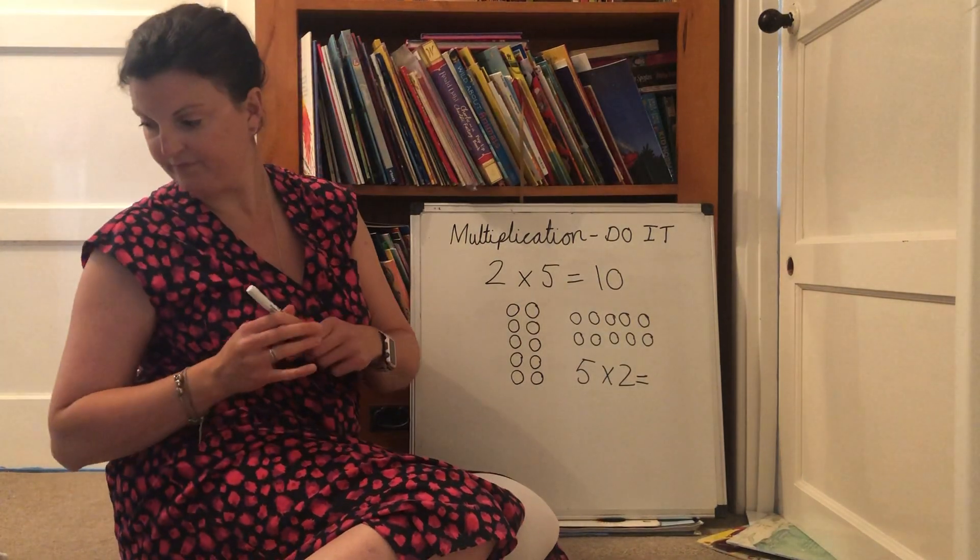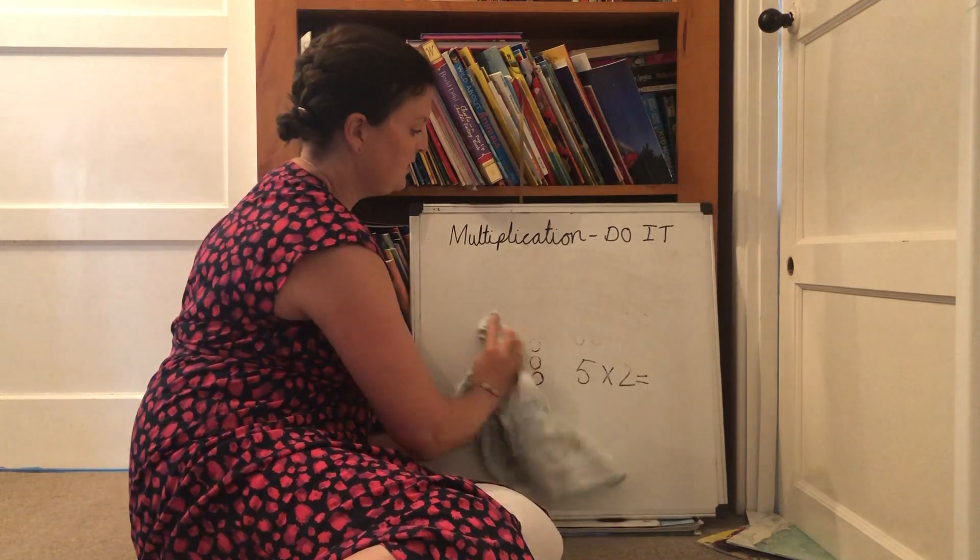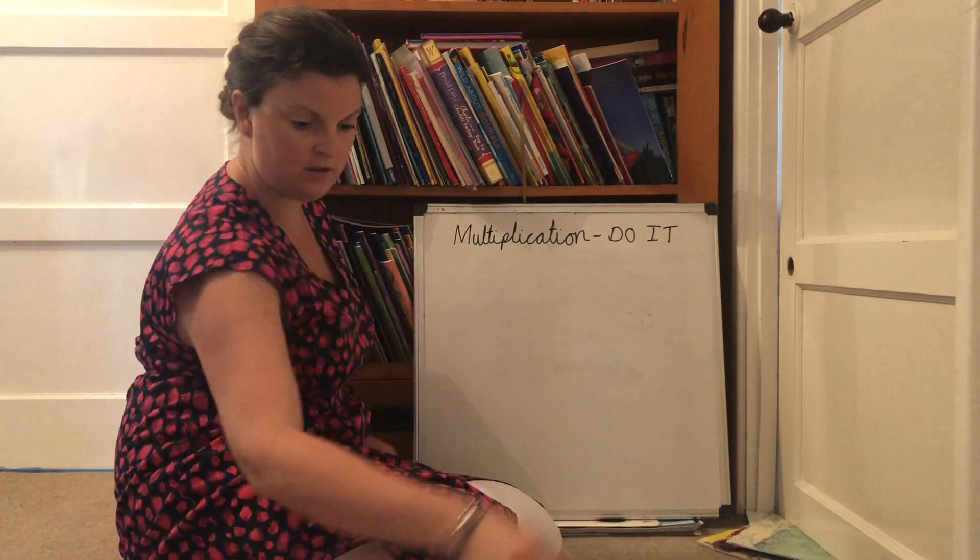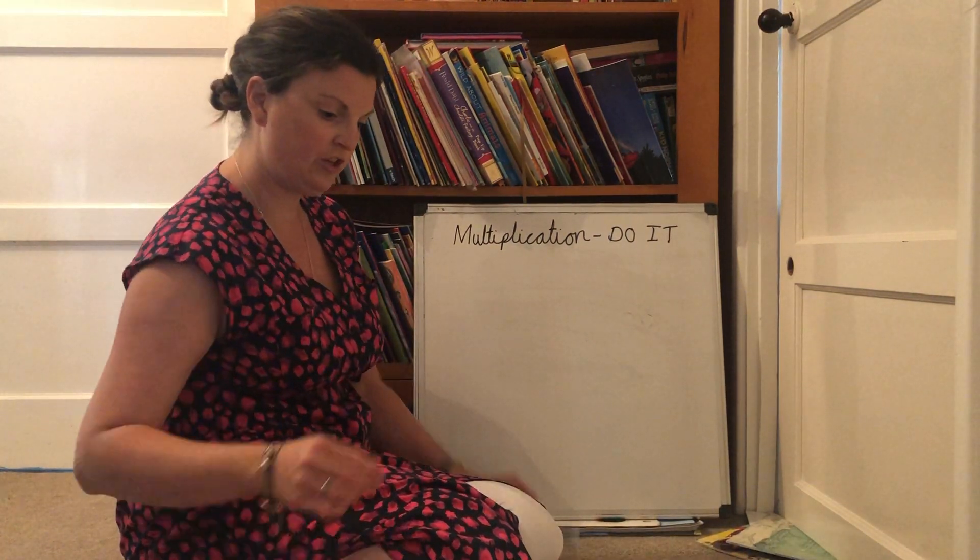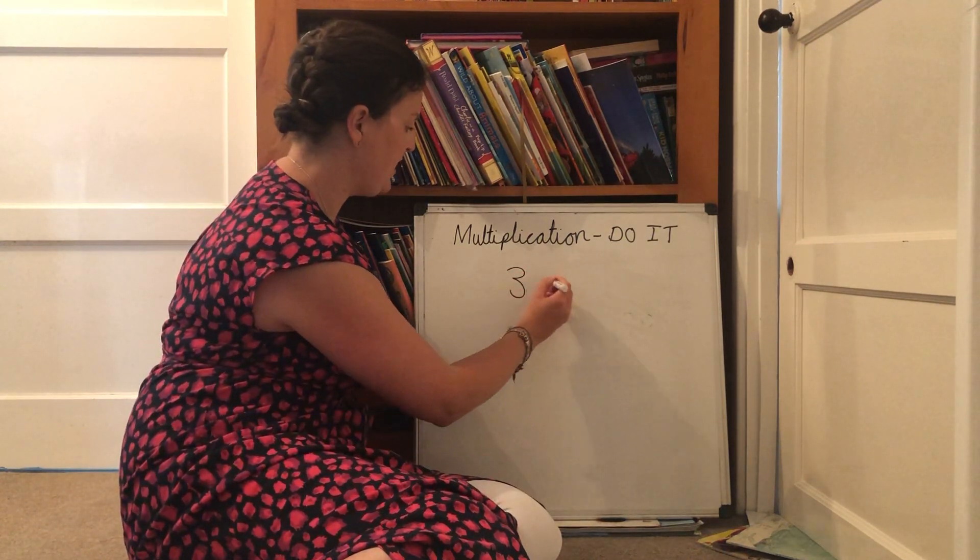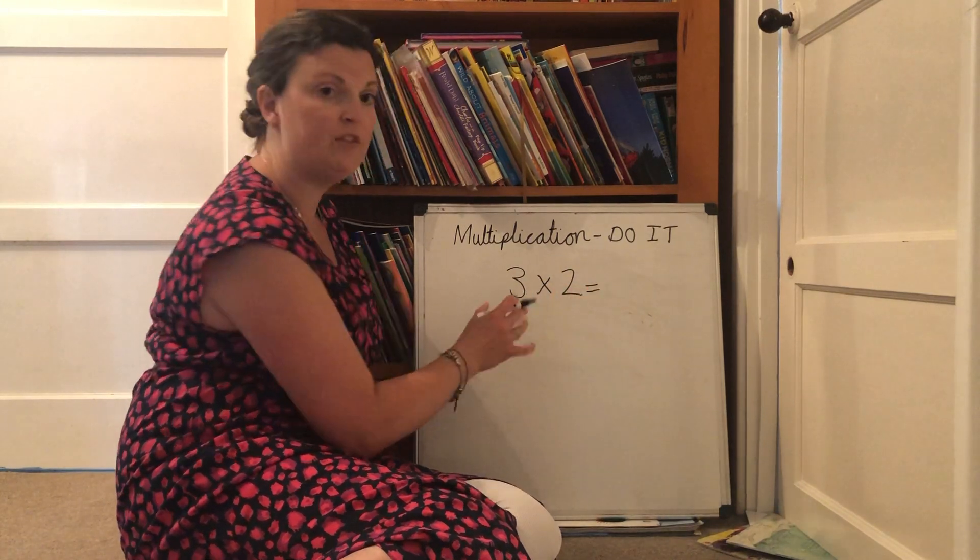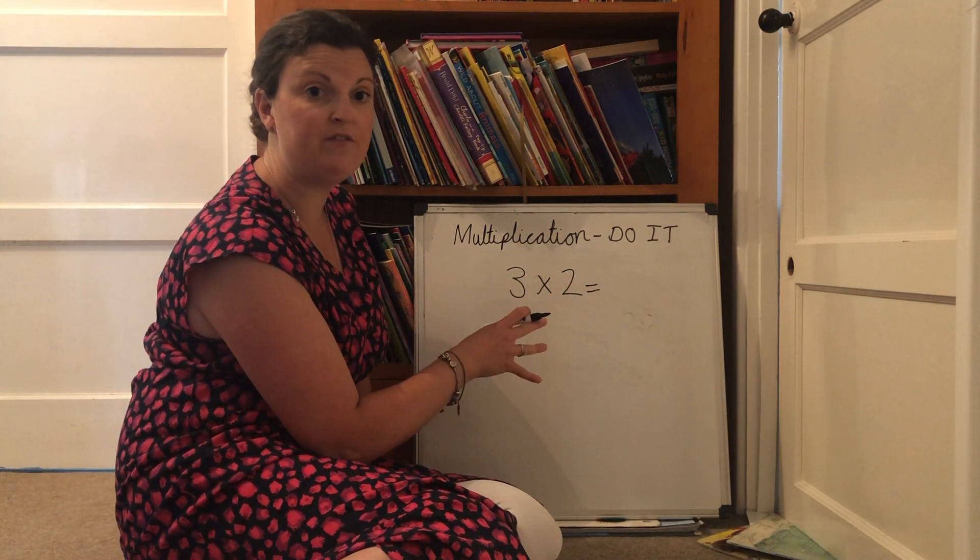Right. Let's rub that out and have a go at one of the other ones. Let's choose three times two. Three times two equals. So remember to copy down the calculation first.